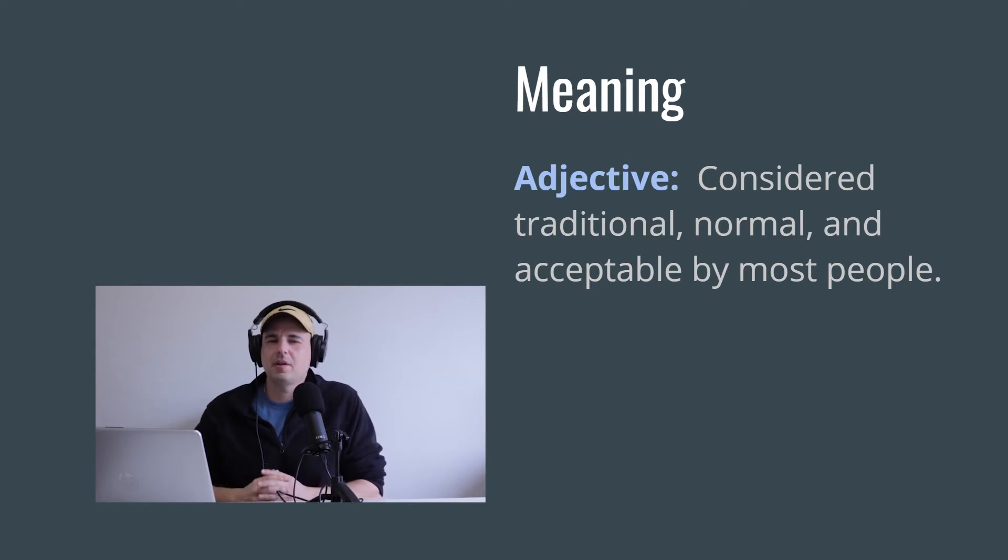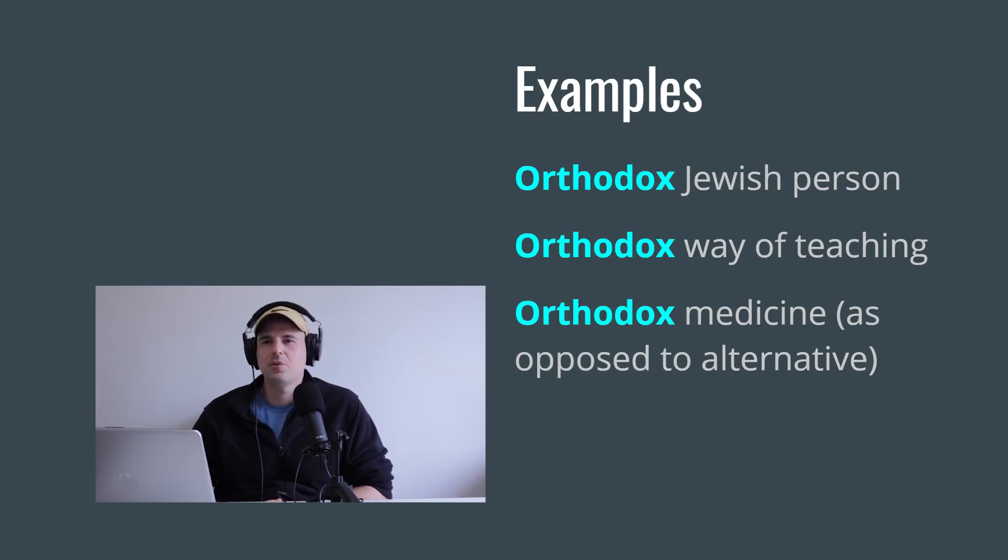Now, examples are really going to clear this up. If you think about something that's orthodox, what comes to mind? First one is religion. So if you think about an orthodox Jewish person or an orthodox Christian, you're talking about someone who follows the religion very closely and very traditionally, basically how it's described originally in the Bible in this case.